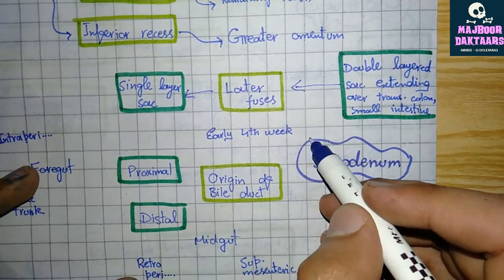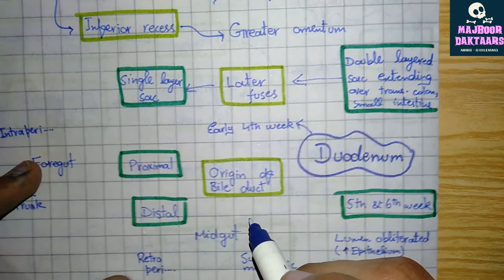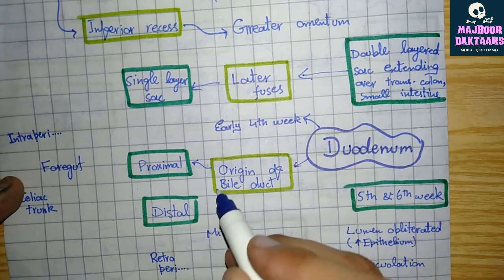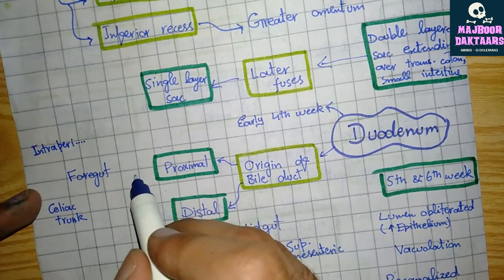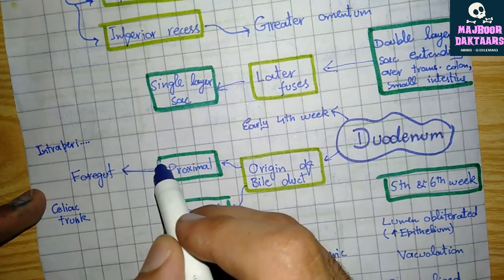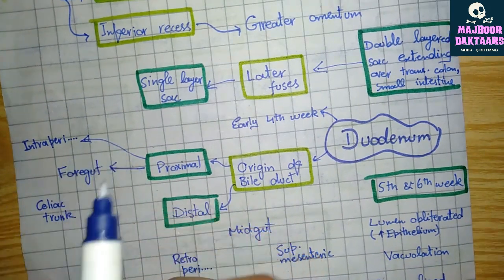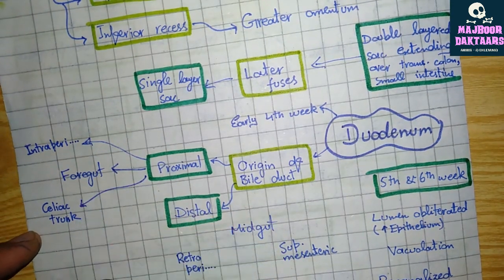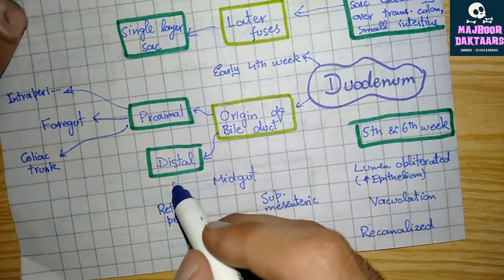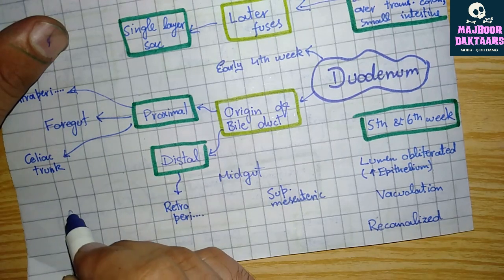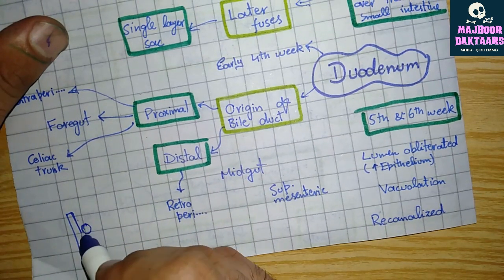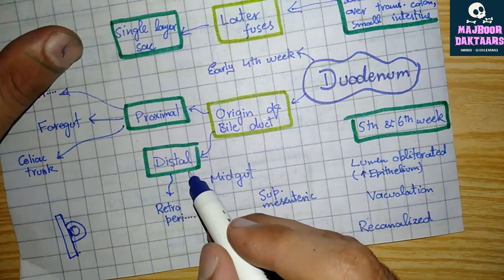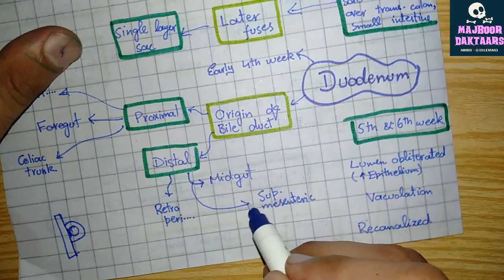The duodenum starts from the early fourth week of development. It is divided into two parts: the part proximal to the origin of the bile duct, which comes from the foregut and is intraperitoneal and supplied by the celiac trunk; and the part distal to the origin of the bile duct, which is retroperitoneal, formed from the midgut, and supplied by the superior mesenteric artery.